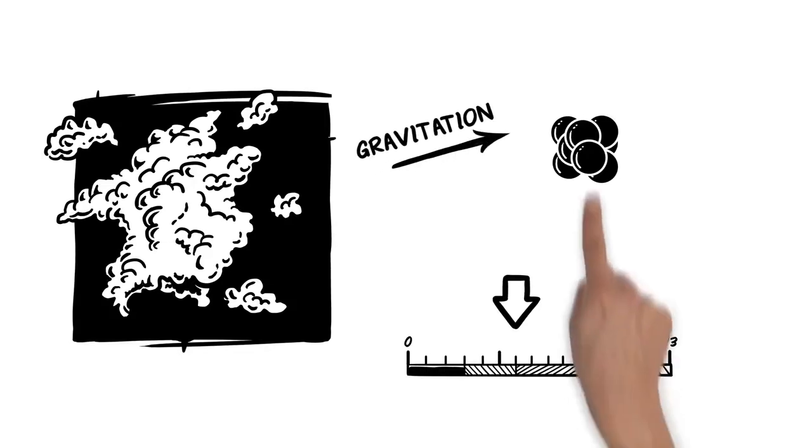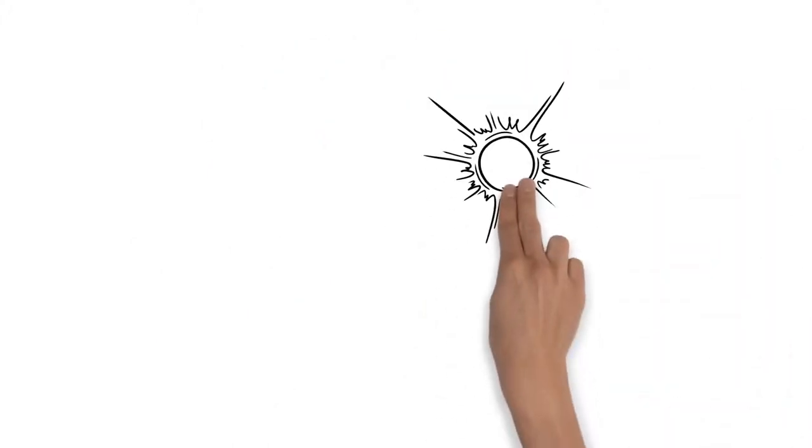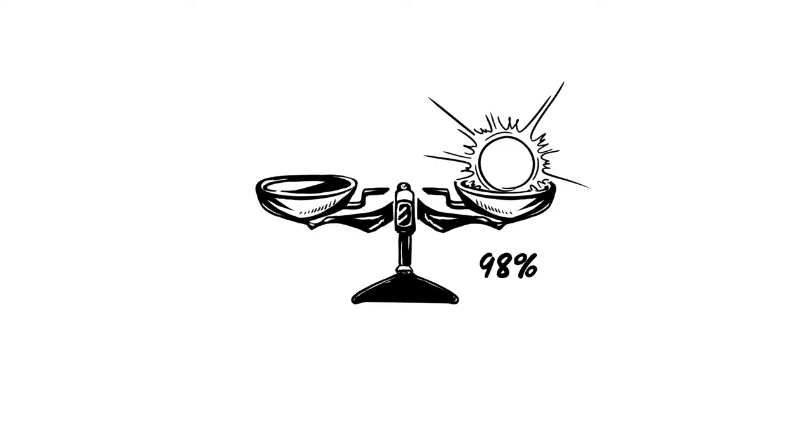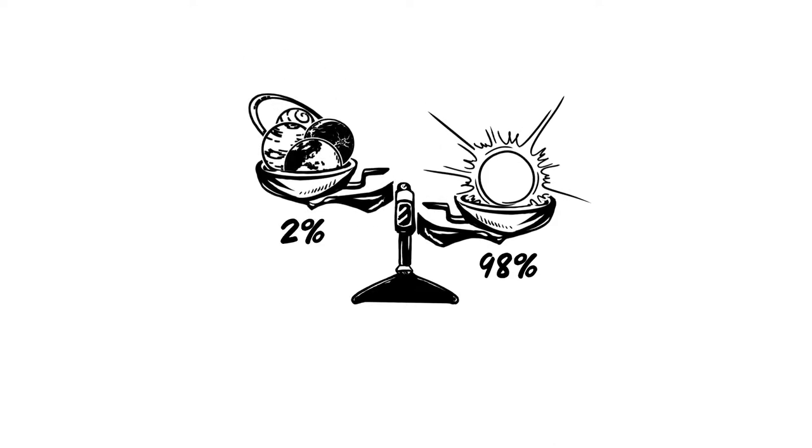Most of the matter accumulated in one place. A very big, hot ball, which makes up for an impressive 98% of all the matter in the solar system, the Sun.